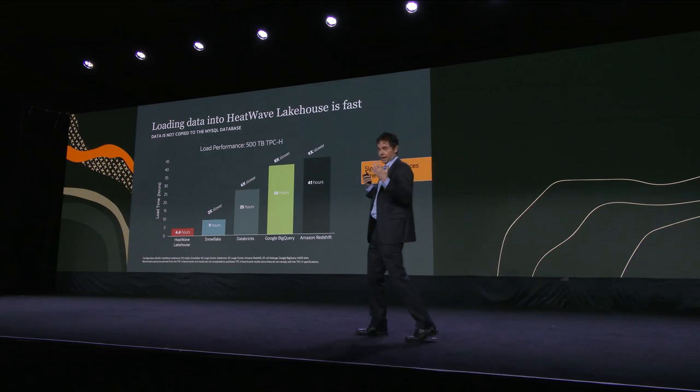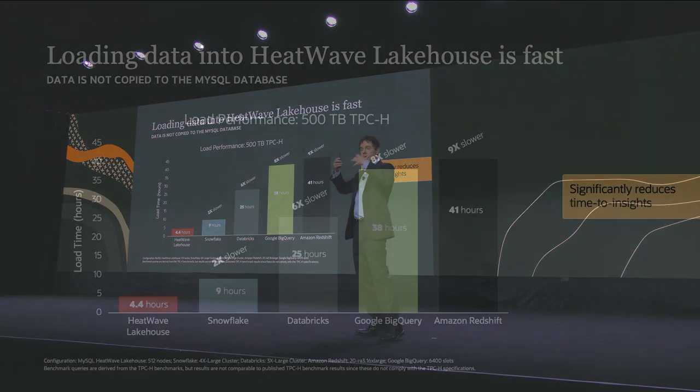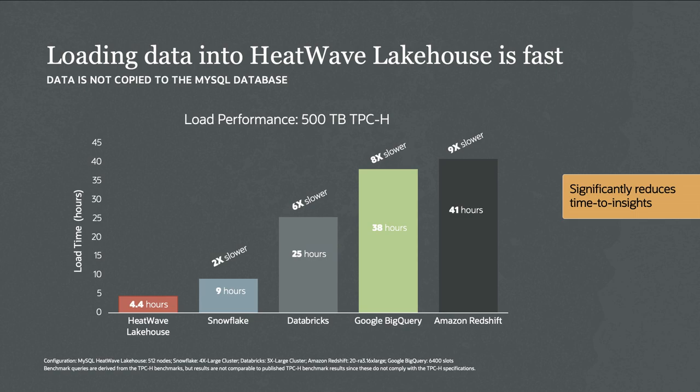Loading data into Lakehouse is very fast. HeatWave uses a cluster of nodes, loads data into memory, and processes queries in memory — that's why it's so fast. The memory loading of MySQL HeatWave Lakehouse is much faster than the competition: twice as fast as Snowflake, six times as fast as Databricks, eight times as fast as Google BigQuery, and nine times as fast as Redshift.